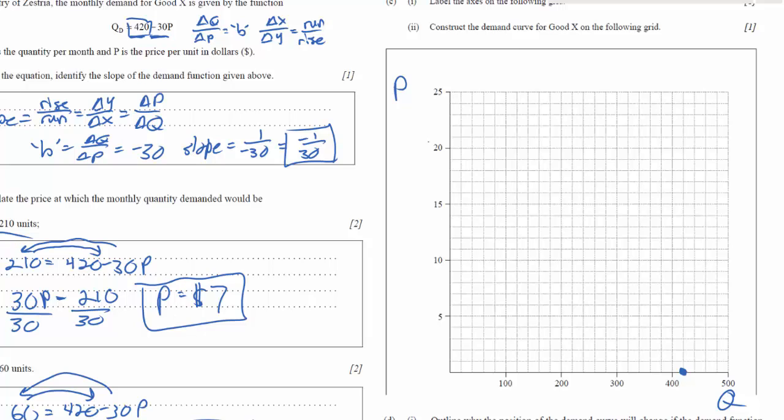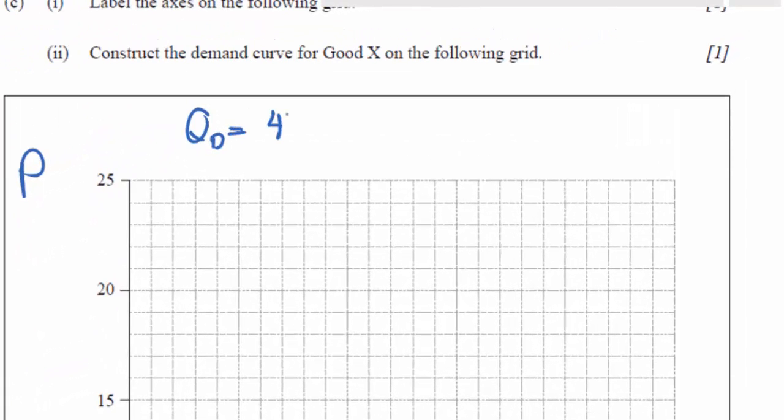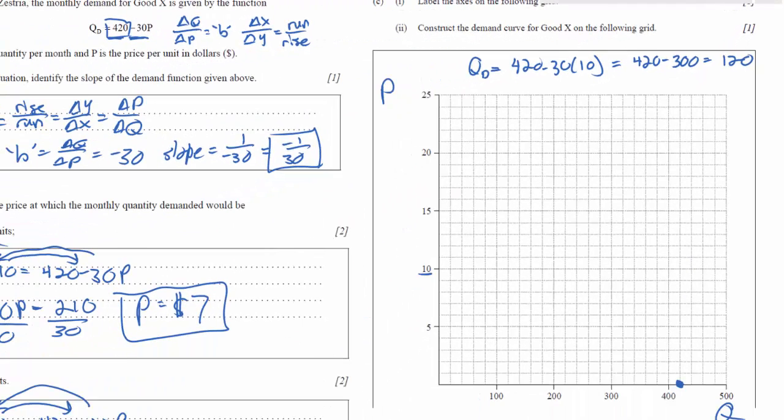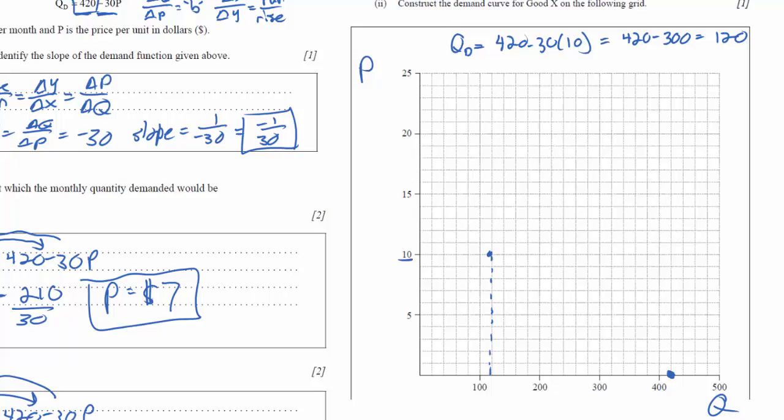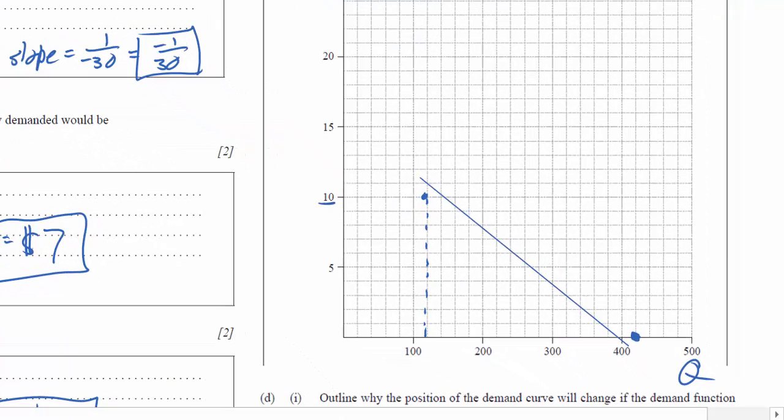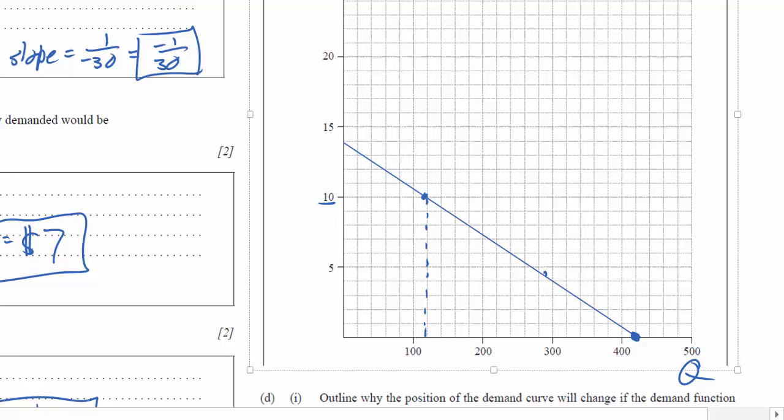All I need to plot my demand curve is another point on the demand curve. To do that I can just choose any other price. Why don't we choose $10 again and we'll plug in P to our equation and solve for Q. So we know that Qd equals 420 minus 30 times 10 in this case. Let's simplify that. Qd equals 420 minus 300 and 420 minus 300 equals 120. So at a price of 10, 120 units are demanded. So that puts us right here. We have two points in our demand curve. We can connect these points. And that gives us our demand curve.